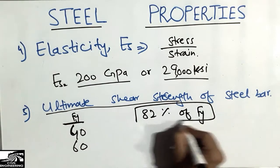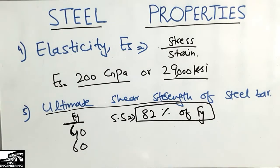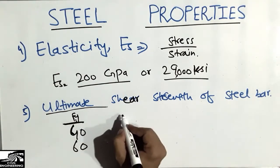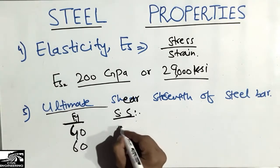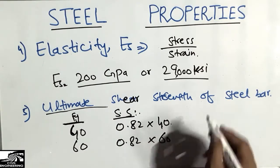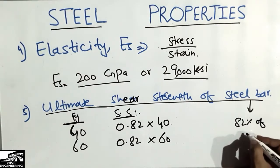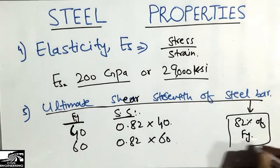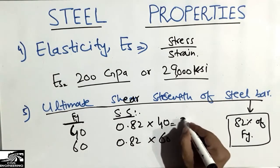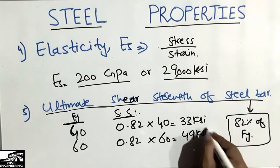So the shear strength of the steel bar equals 82% of the yield strength. For Grade 40, the ultimate shear strength equals 0.82 × 40 KSI, and for Grade 60 it equals 0.82 × 60 KSI. This gives an ultimate shear strength of approximately 33 KSI for Grade 40 and approximately 49 KSI for Grade 60.